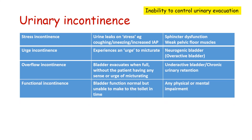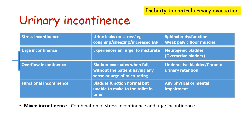Functional incontinence is when the bladder function is normal but the person is unable to make it to the toilet in time and passes urine before reaching it. This may be due to any physical or mental impairment, for example a fracture, dementia, or something similar. So basically, it is urge and overflow incontinence which are seen in neurogenic bladder or because of bladder dysfunction. There is also mixed incontinence, which is a combination of stress incontinence and urge incontinence.